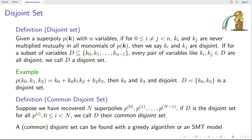First, we introduce the disjoint set of our polynomial. Given a Super-Poly p(k) with n variables, if k_i and k_j are never multiplied together in all monomials of p(k), then we say p_i and p_j are disjoint. If for a subset of variables d, every pair of variables in d are disjoint, we call d a disjoint set.